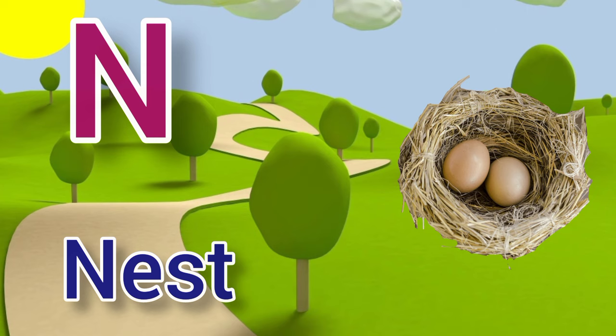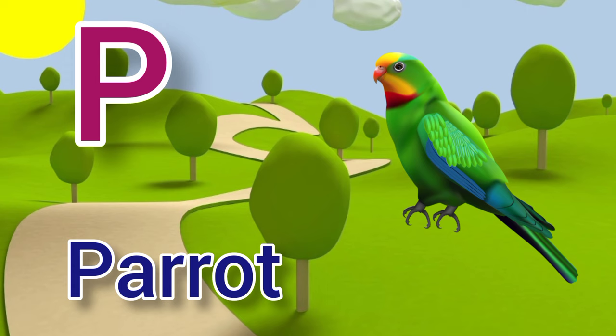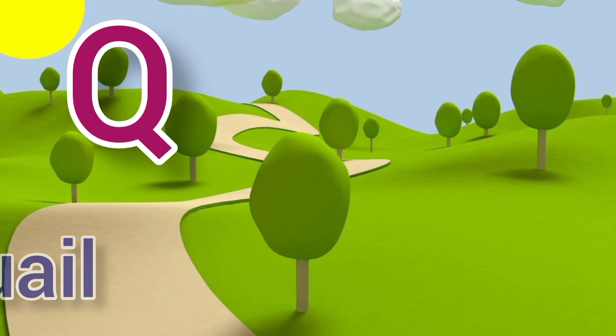O for orange, orange means santra. P for parrot, parrot means tota. Q for quail, quail means batir.